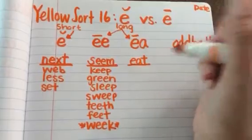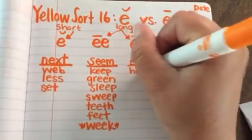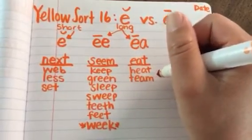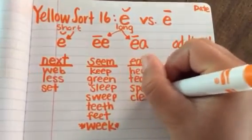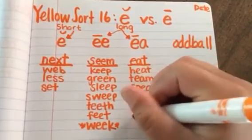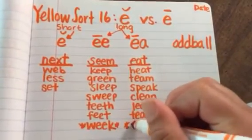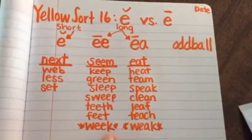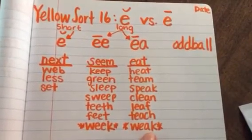The other words, there are eight in this category as well. We have eat, heat, team, speak, clean, leaf, teach, and weak. This weak means the not strong. So be careful and watch these two: week meaning the seven days and the length of time, and this is the weak meaning not strong.